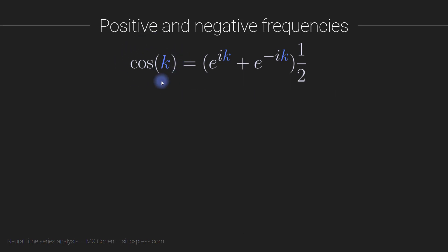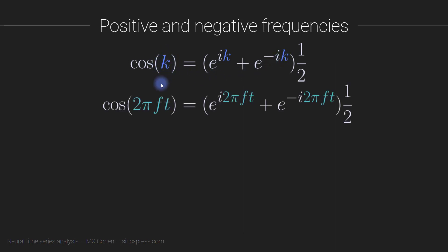To get a real valued signal from complex valued sine waves, we follow this formula: we need e to the ik plus e to the minus ik, with a normalization factor of one half. Replacing k with the contents of a cosine wave — cosine of two pi f t — we need e to the i·2πft plus e to the minus i·2πft. The term with minus i corresponds to the positive frequencies, and the term without corresponds to the negative frequencies.